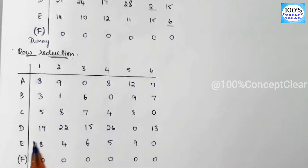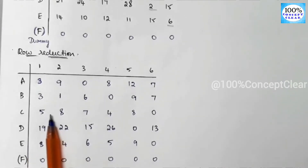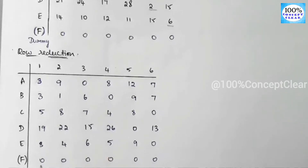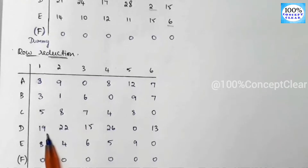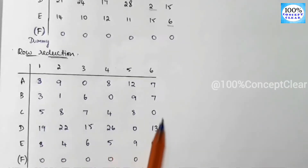Next, row reduction is followed by column reduction. Column reduction means choosing the least value column-wise. Here, all columns already have a 0, so the column reduction values are 0 — we carry forward the same matrix.